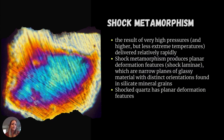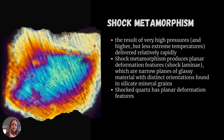Shock metamorphism results from very high pressures applied almost instantaneously. You can see shock lamination — visible lines in the mineral. This most commonly occurs from an impact event, such as an asteroid or meteorite striking rocks at the surface. The intense pressure shocks minerals like quartz, producing a characteristic deformation in the rock.